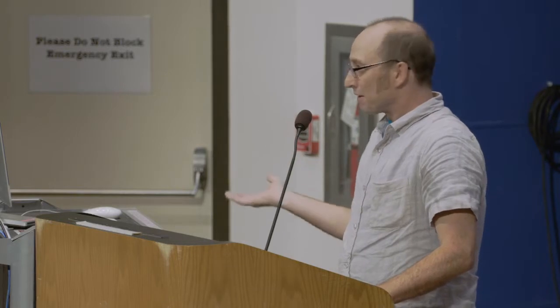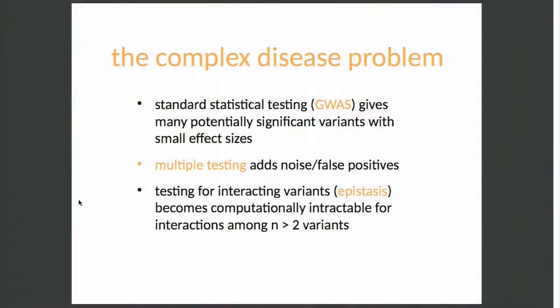So in the GWAS — the complex disease problem — we're trying to associate genetic variants with disease phenotypes. For most diseases, there are very small contributions from many possible genes or variants, and there's the statistical problem of doing so many tests that you get a lot of false positives. Looking at each independent variant as a correlation works for one variant, but if you want to test for more than one variant or interactions of variants, even at genome scale with current technology, looking at more than two variants interacting is just not computationally tractable.